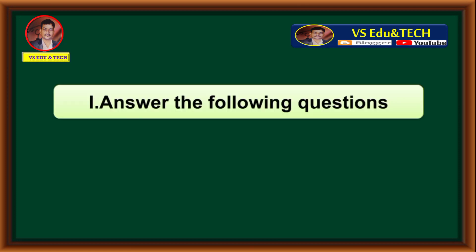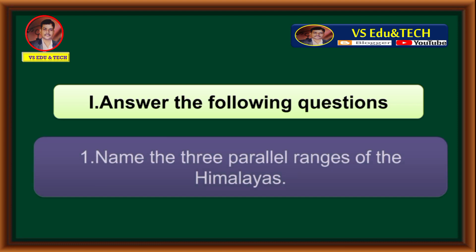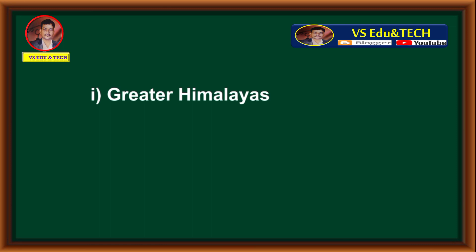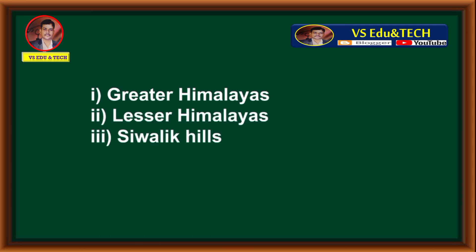Question 1: Name the three parallel ranges of the Himalayas. The three parallel ranges of the Himalayas are: first, the Greater Himalayas; second, the Lesser Himalayas; third, the Siwalik Hills. These are the three parallel ranges of the Himalayas.